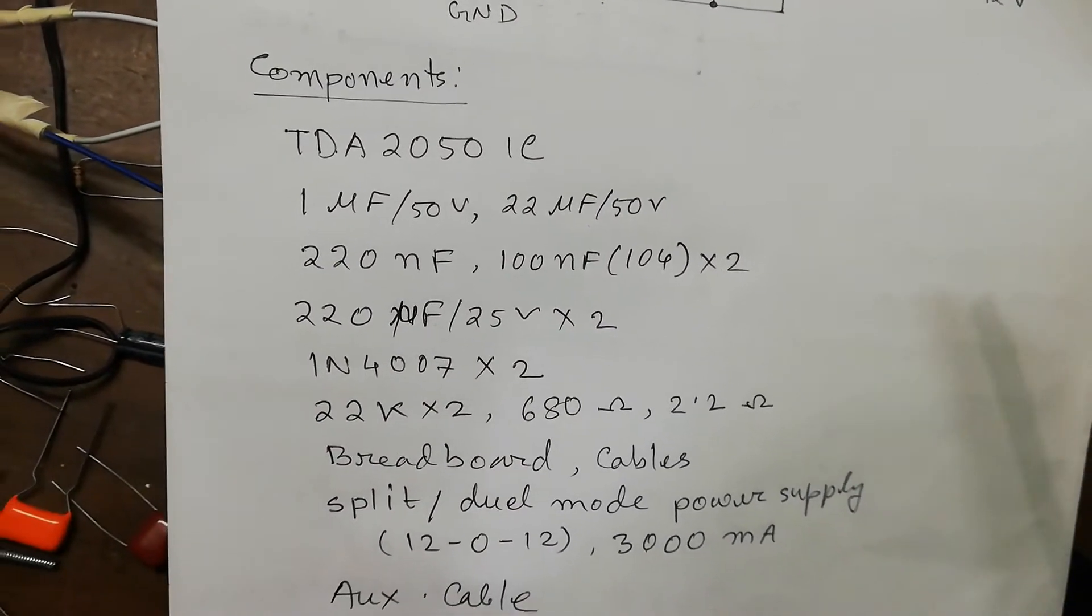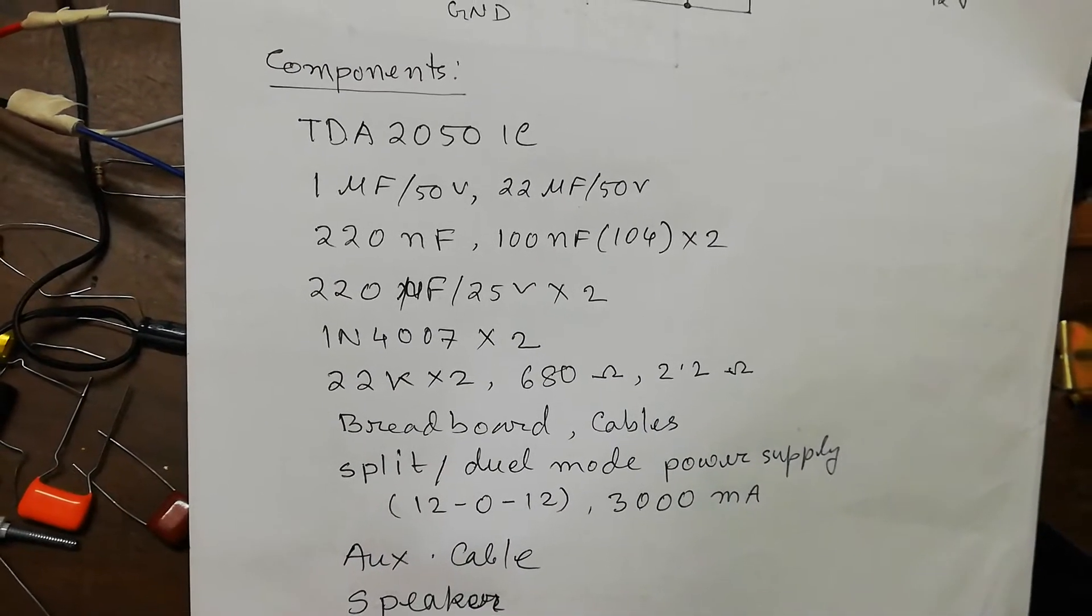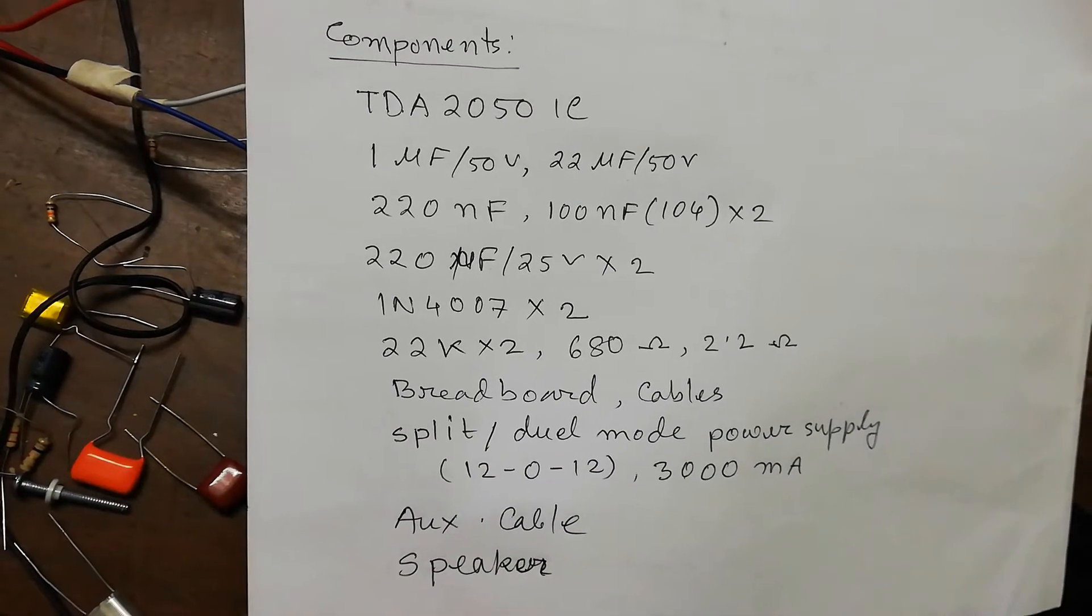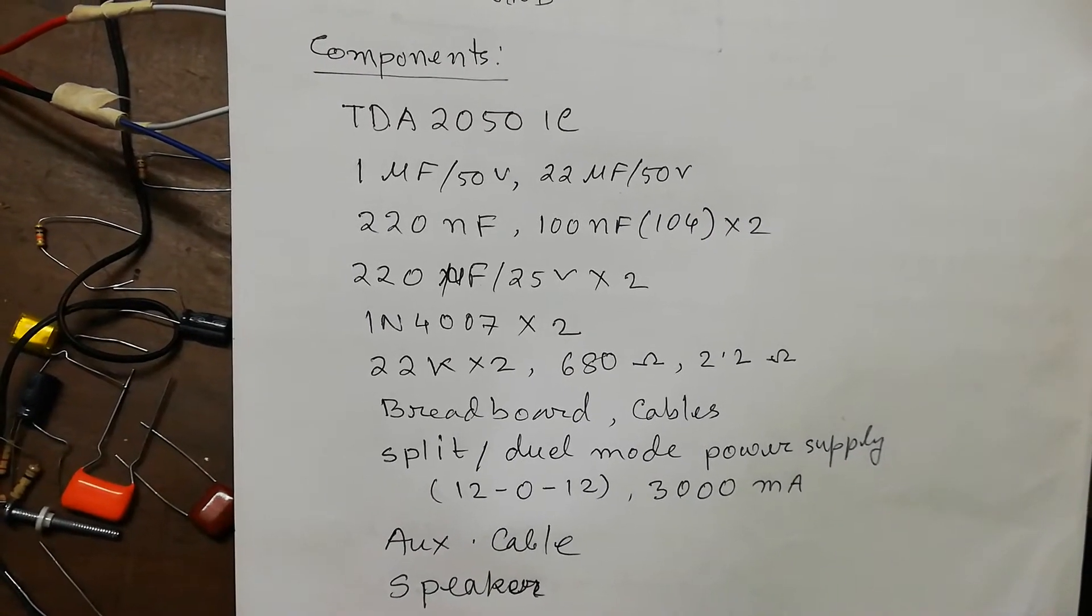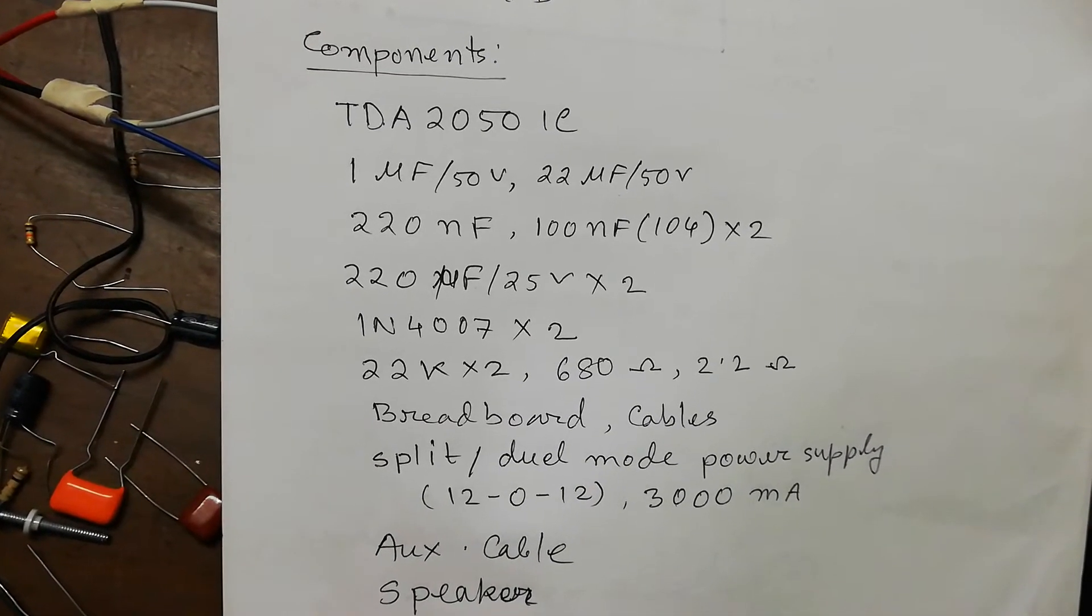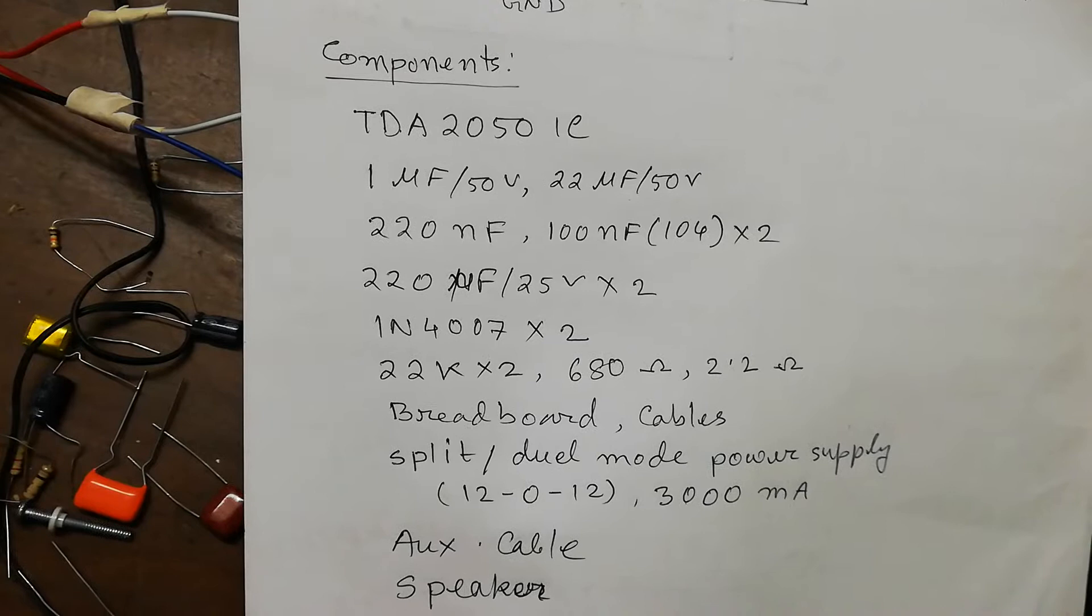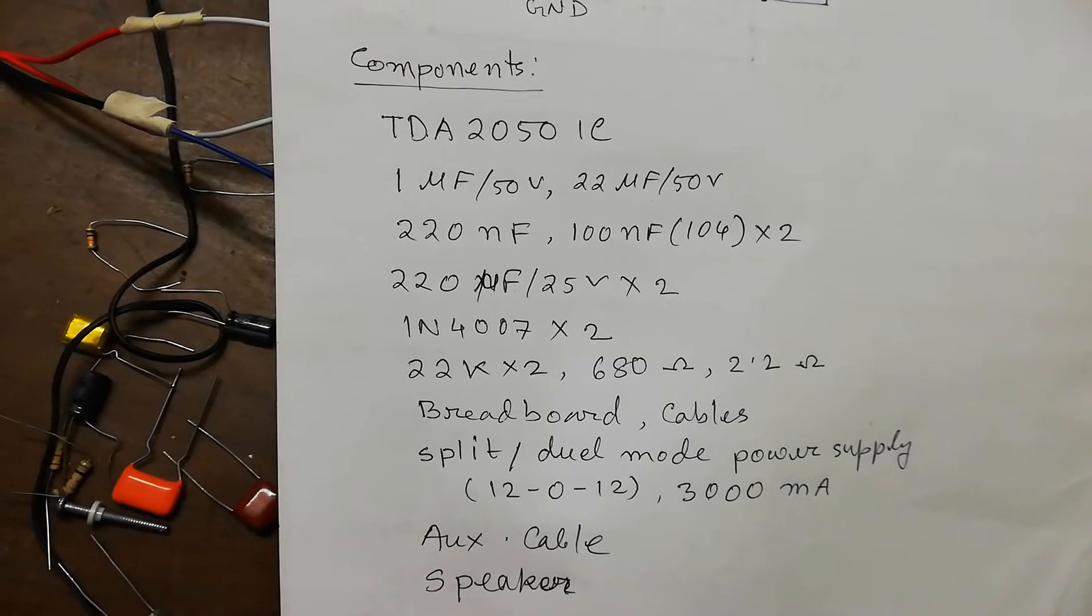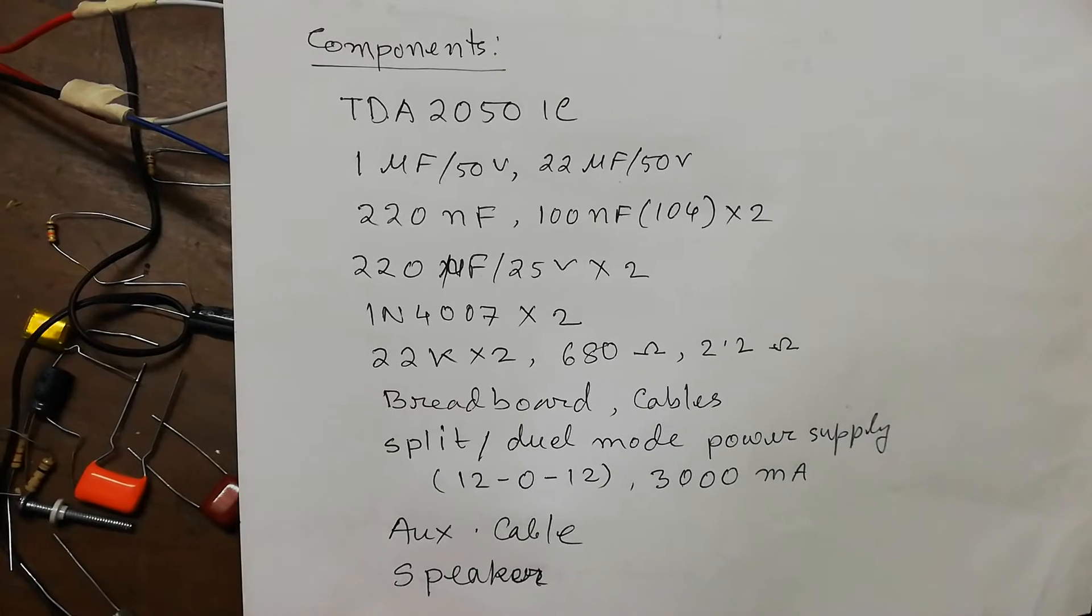To make this amplifier, we need a TDA 2050 IC, few capacitors like 1 microfarad 50 volt, 22 microfarad 50 volt, 220 nanofarad. Although according to the datasheet we are required 0.47 microfarad capacitor, but at present I don't have that capacitor in my hand, that's why I use 220 nanofarad capacitor. And also I will require 100 nanofarad capacitor, which is called 104 J or K, two pieces.